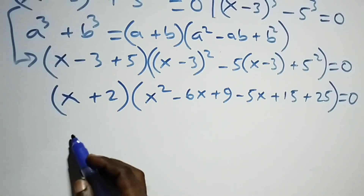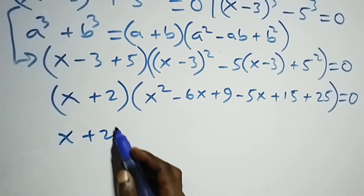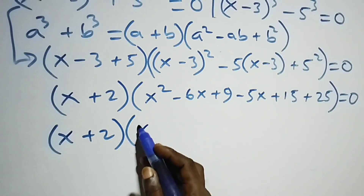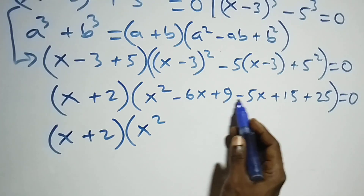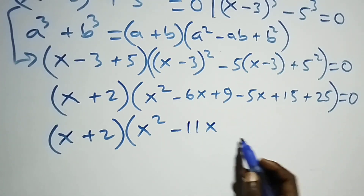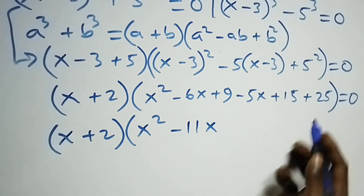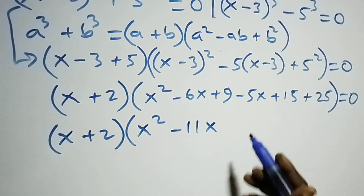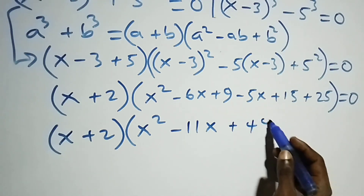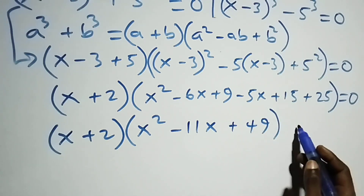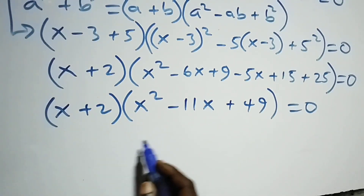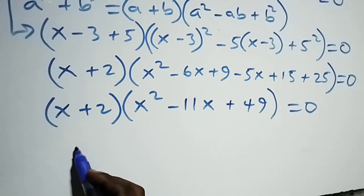This is the same thing as (x plus 2) into brackets, then open brackets: x squared, minus 6x minus 5x equals minus 11x, then 15 plus 25 gives 40, plus 9 gives 49, close brackets, equals to zero.